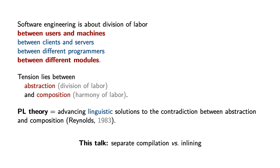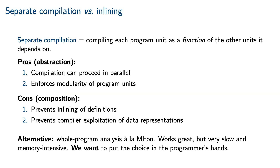In this talk, we will focus on one particular example of this contradiction: the tension between separate compilation and inlining. Separate compilation is a simple idea, which is to compile each program unit as a function of the other units that it depends on. It is attractive because compilation is easily parallelizable — even if one unit depends on another, they can both be compiled at the same time. Separate compilation is also attractive from an aesthetic point of view, because it enforces the modularity of program units. In principle, even a compiled unit could have its dependencies replaced without changing the overall behavior of the program.